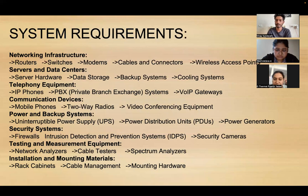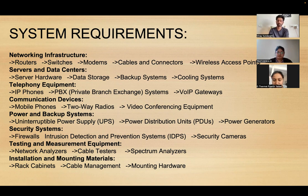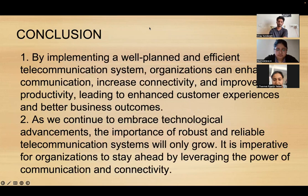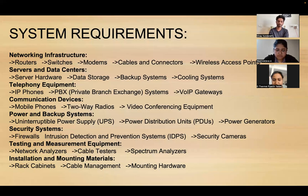Before setting up the system, we have several material requirements. Networking infrastructure includes routers, switches, modems, cables, connectors, and wireless access points. Servers and data centers include server hardware, data storage, backup systems, and cooling systems. Telephone equipment includes IP phones, private branch exchange systems, and VoIP gateways. Communication devices include mobile phones, two-way radios, and video conferencing equipment. Power and backup systems include uninterruptible power supply units, power distribution units, and power generators.